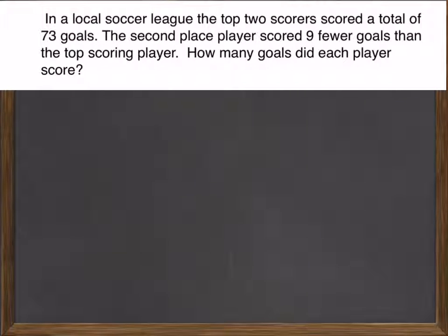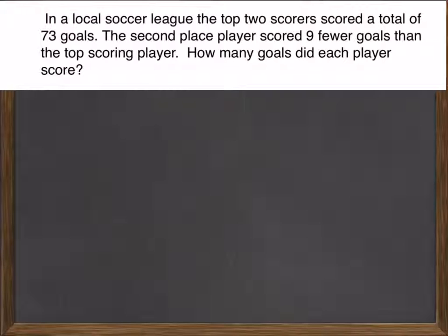Here we have another word problem. In a local soccer league, the top two scorers scored a total of 73 goals. The second place player scored nine fewer goals than the top scoring player. How many goals did each player score?